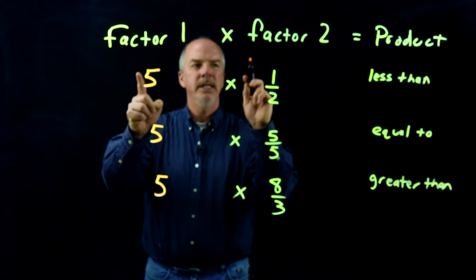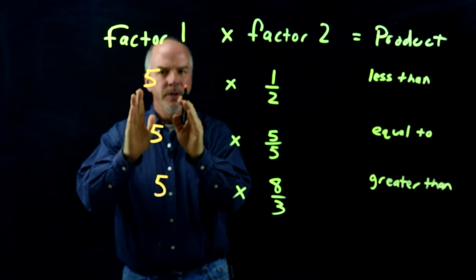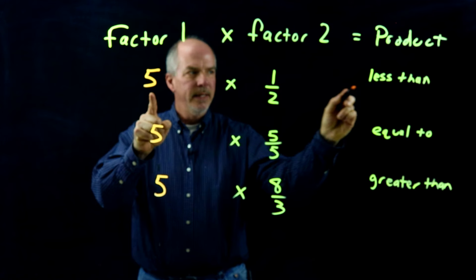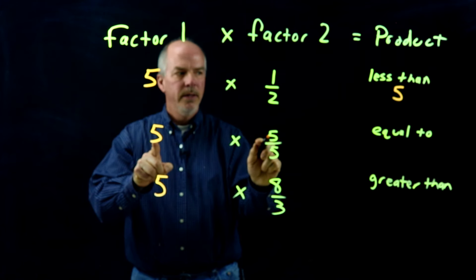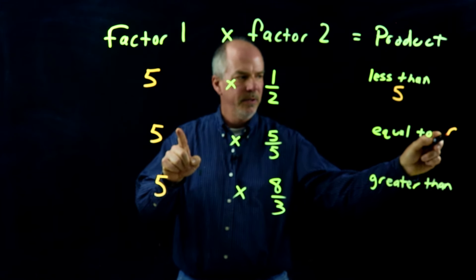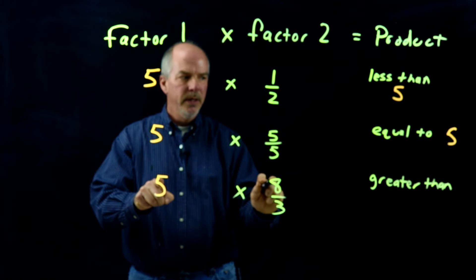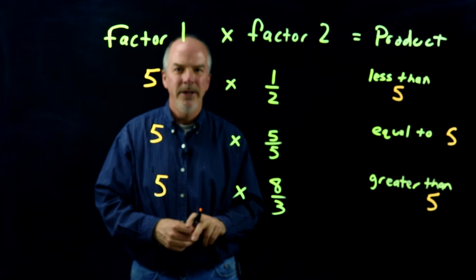So to summarize: factor 1 times factor 2 equals the product. If we're zeroing in on factor 1 and we multiply it by something less than 1, then our product will be less than factor 1. If we multiply it by 1, our product will be equal to factor 1. And if we multiply it by something greater than 1, then our product will be greater than factor 1. Hope this helps out — thank you for watching. We'll see you next time.